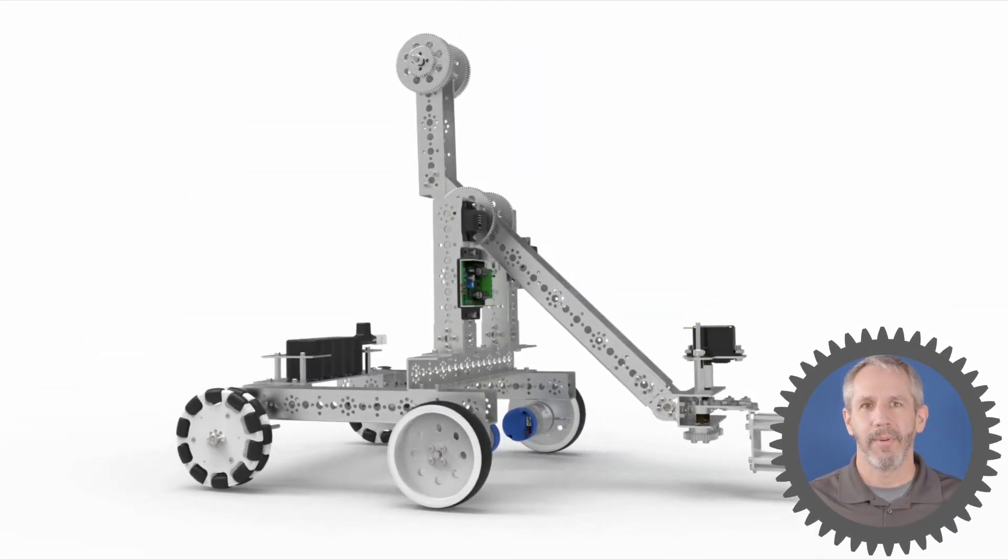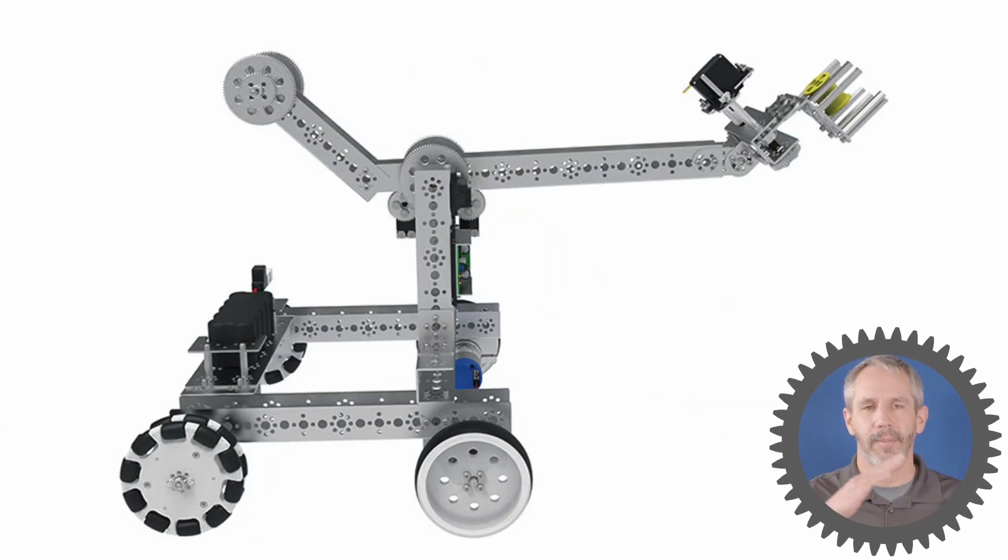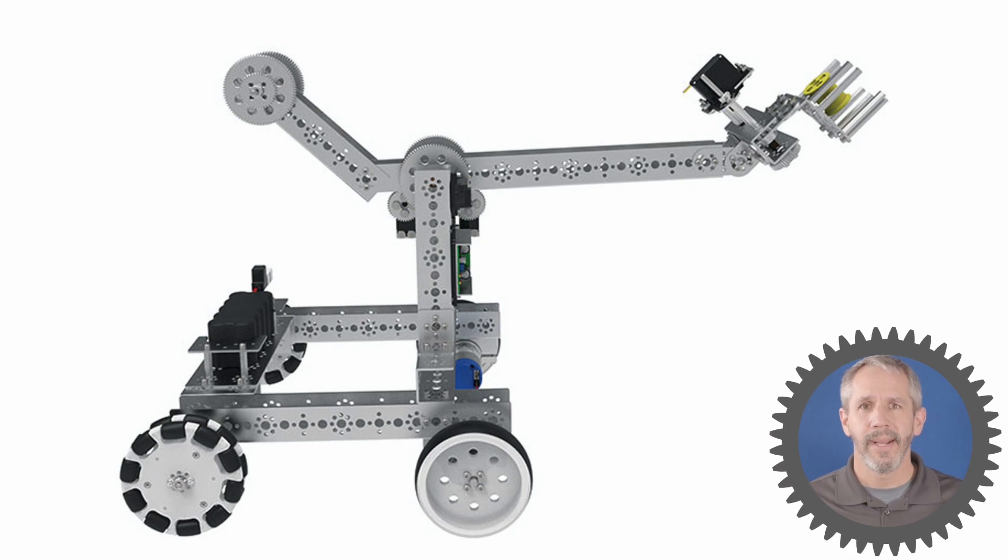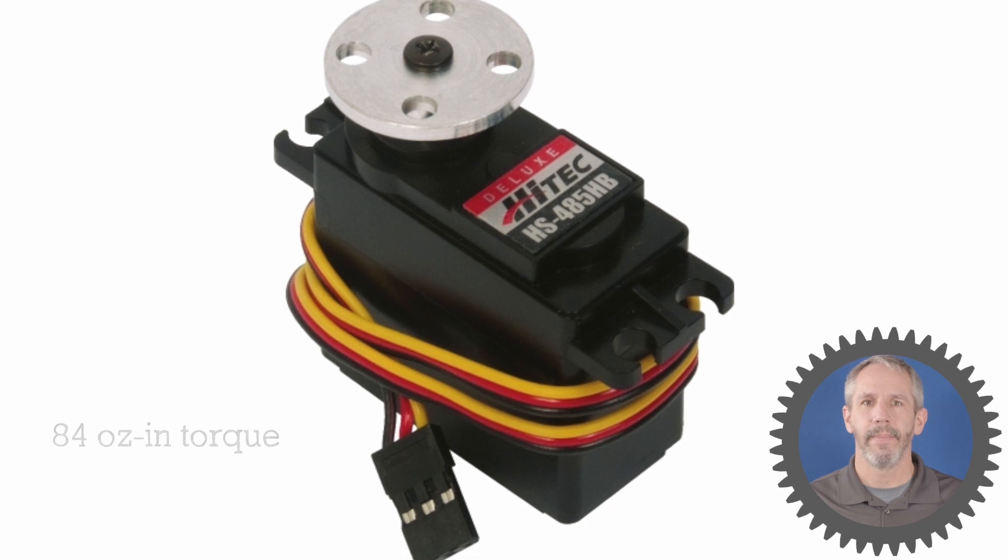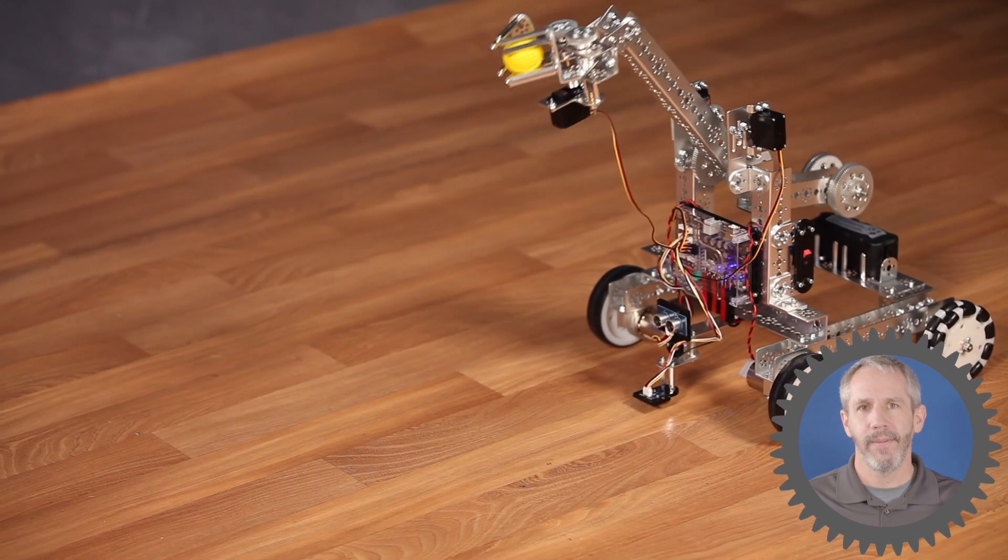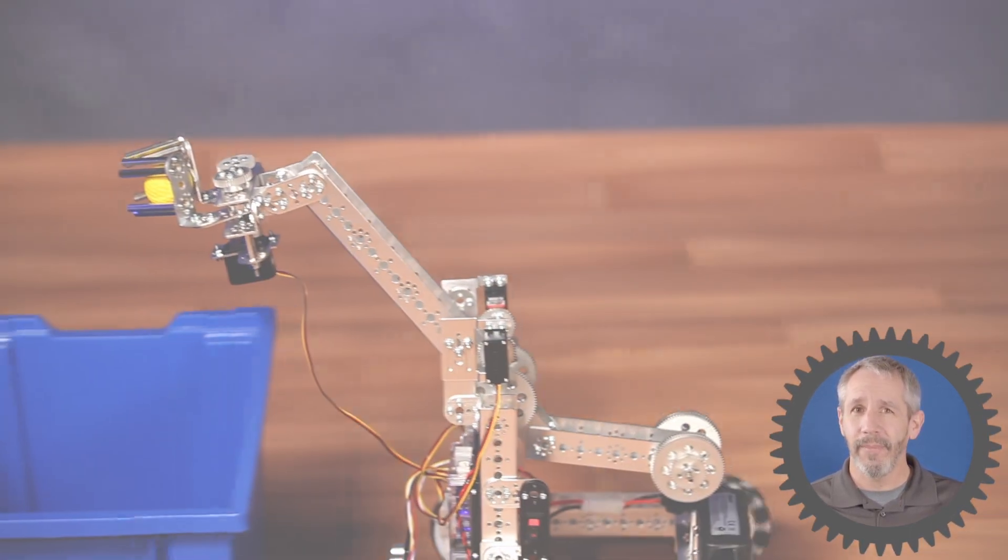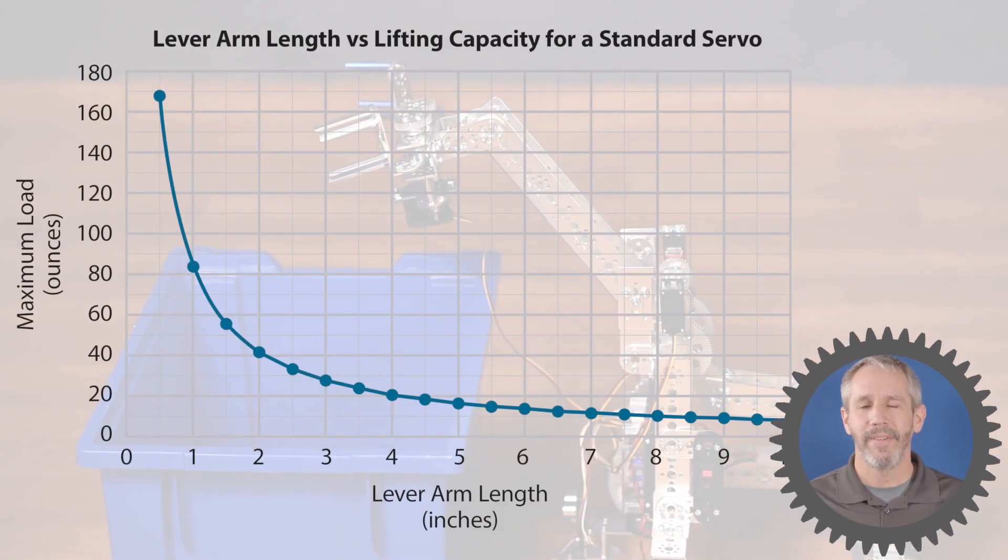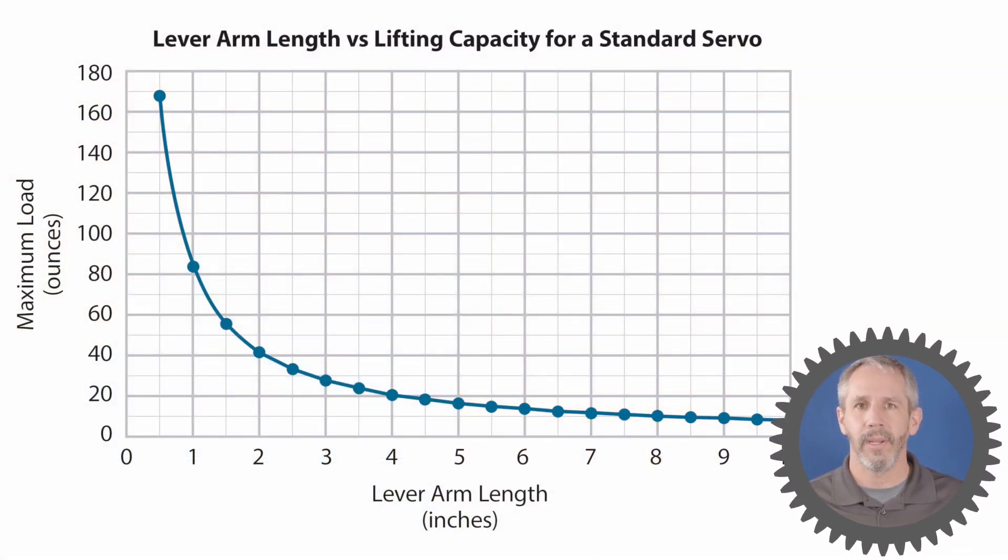This first robot example has a rotating lever arm that's driven by a standard servo. As that servo rotates back, the lever arm lifts up. A standard TETRIX MAX servo has a torque rating of 84 ounce-inches of weight. Well, that means that one inch away from the center of rotation of the servo, it can lift 84 ounces of weight - that's over five pounds, that's quite a lot. However, as that distance increases away from the center of rotation, the amount of weight the servo can lift decreases. So at two inches, for example, it can only lift 42 ounces of weight.